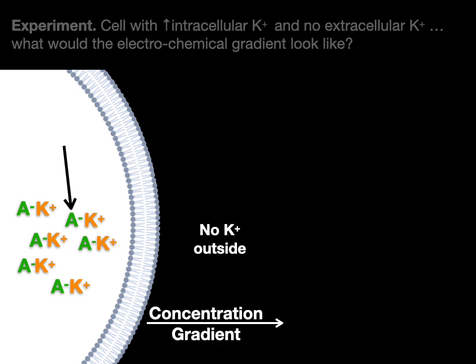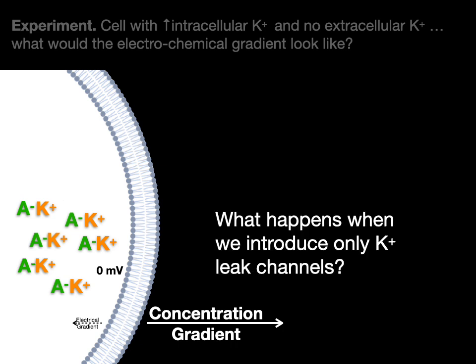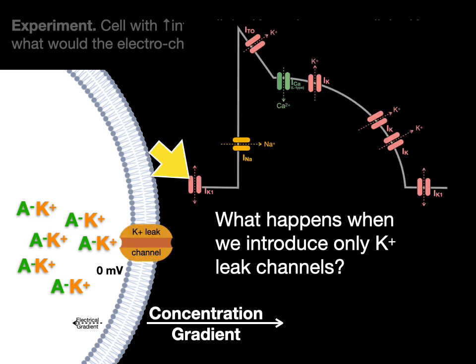All those potassium ions are bound to negatively charged anions. So there's a big concentration gradient — potassium wants to move down its gradient from inside to outside the cell, but potassium cannot walk through walls. It's a charged ion. So there's no electrical gradient, and the VM is zero millivolts. What happens when we introduce only potassium leak channels? The IK1 channel — which we'll be talking about for action potentials in cardiomyocytes. Every single cell in the body has these IK1 channels; they're the ones that establish the resting membrane potential.